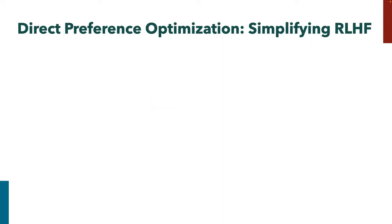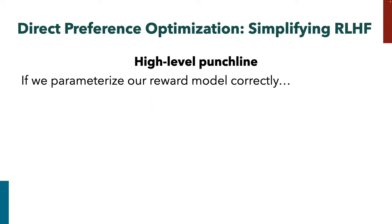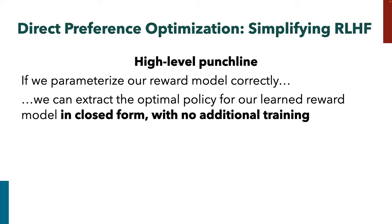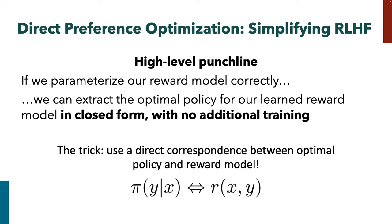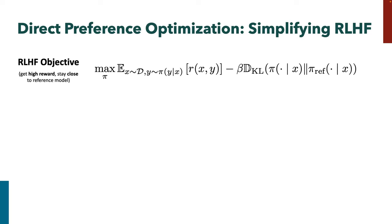Let's get rid of all these issues. Direct Preference Optimization basically simplifies the pipeline. The punchline: if we parametrize the reward model in a special way — pick a particular architecture for our reward model — we can extract the optimal policy for that reward model in closed form, without doing any RL. The main idea is there's a one-to-one correspondence between optimal policies and reward models: given a reward function, there's a closed-form expression for the optimal policy, which is intractable but still useful for our training objective.